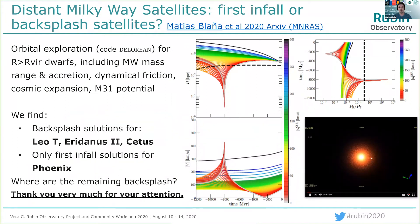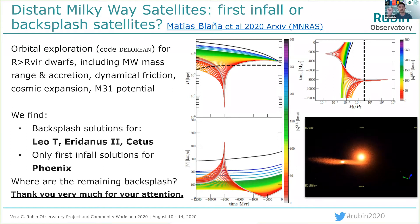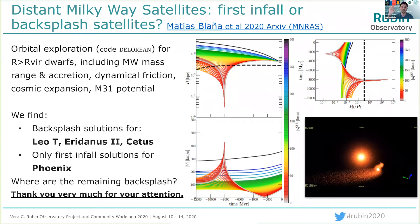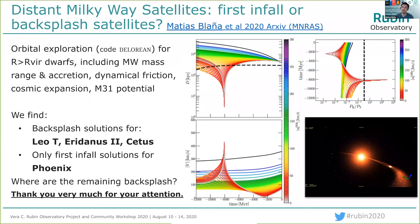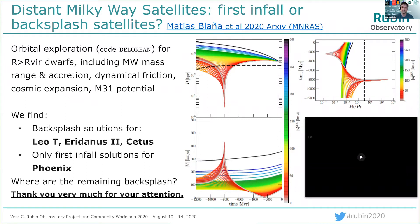What we did is we wrote a code called DeLorean that calculates orbits backward in time. It explores several systematic uncertainties — for example, differences in the virial mass of the Milky Way, the accretion history, the dynamical friction, even cosmic expansion, and the effects of Andromeda because we're studying objects that are like 700 kiloparsecs away. Surprisingly, we found some backsplash solutions for Leo T, Eridanus II, and Cetus, as shown in the middle panel as distance to the Milky Way as a function of time. The color represents tangential velocity. We find backsplash solutions when the velocity is lower than about 70 kilometers per second.